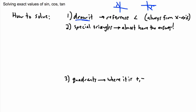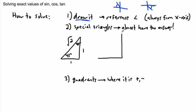Now what are the special triangles? Hopefully you remember those — we did those before. There are two special triangles: one that's 45-45-90, which goes 1, 1, root 2. And the other is a 30-60-90 triangle, which goes 1, 2, root 3. Those are the ones you need to know.